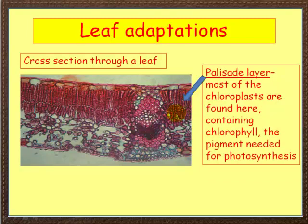Just beneath the waxy layer and beneath the upper epidermis you've got what's called the palisade layer. Most of the chloroplasts are found in this layer. Chloroplasts contain chlorophyll, which is the pigment the plant needs for photosynthesis. It makes sense — if light is hitting the top surface, it makes sense to pack your chlorophyll into the palisade layer where most sunlight is.